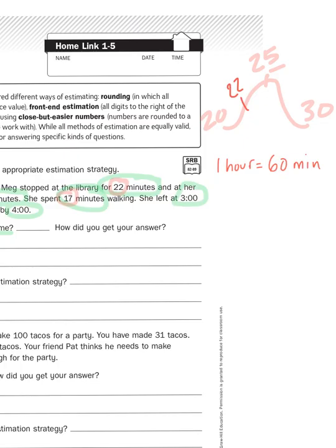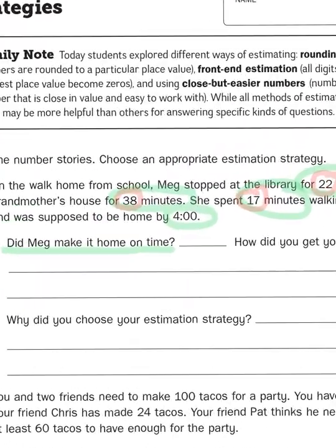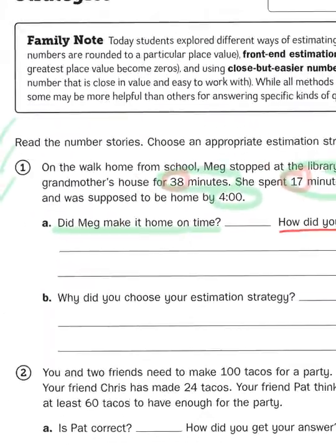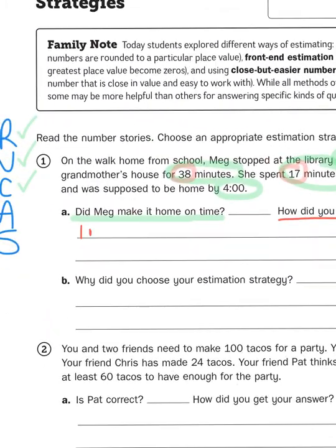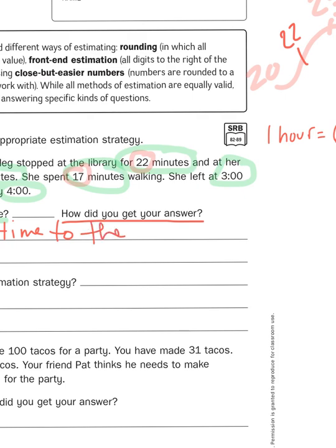So I'm going to create a problem right here. And it ties into the second part, which is, how did you get your answer? So I'm going to start by saying, I rounded each time to the nearest 10.